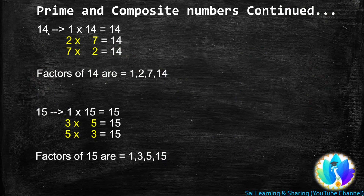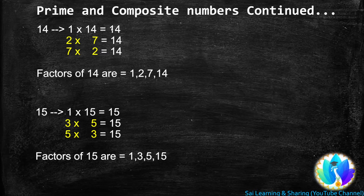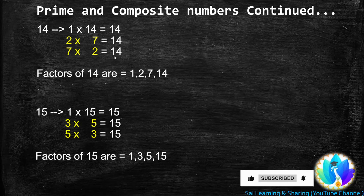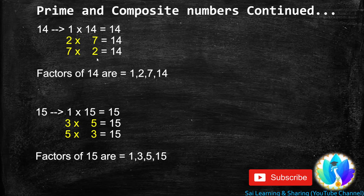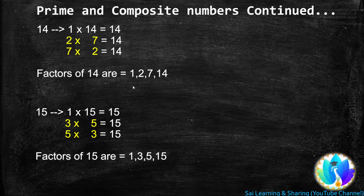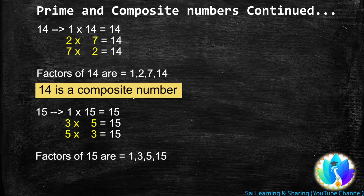Next, 14. 1 is a factor of every number, so 1 × 14 = 14. 14 is a multiple of 2: 2 × 7 = 14. 14 is a multiple of 7: 7 × 2 = 14. We stop here because both 2 and 7 have occurred earlier. So the factors of 14 are 1, 2, 7, and 14. Since 14 has more than two factors, 14 is a composite number.